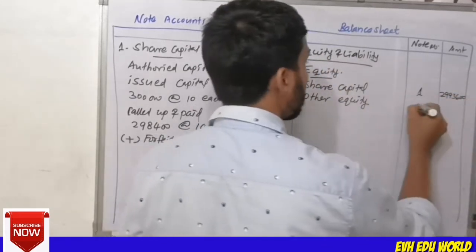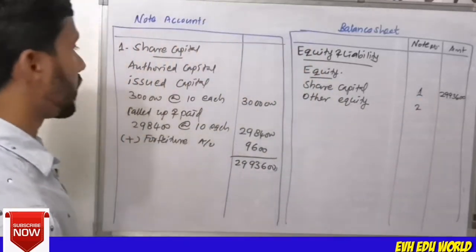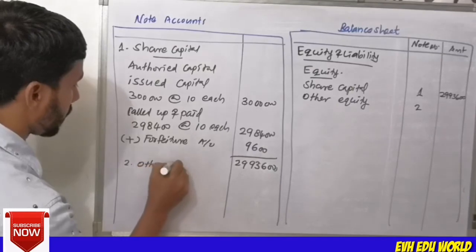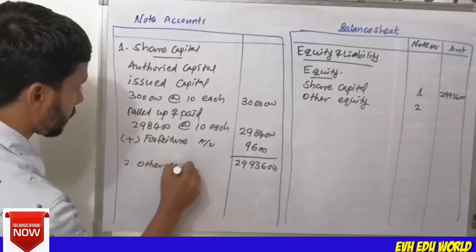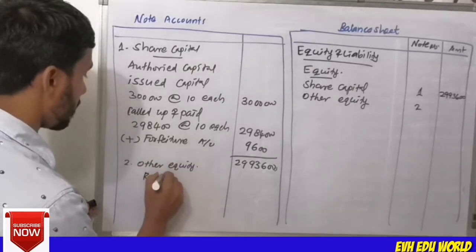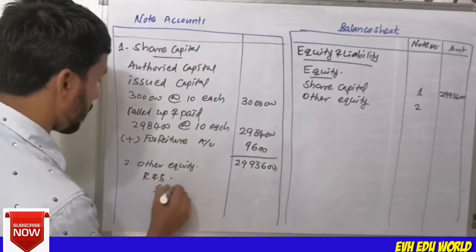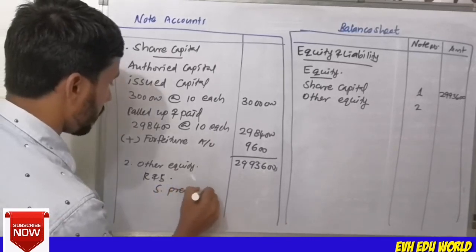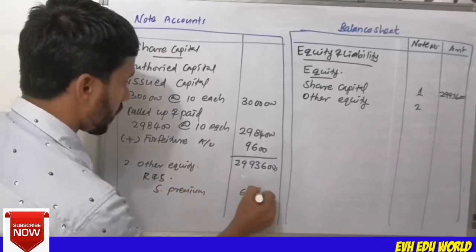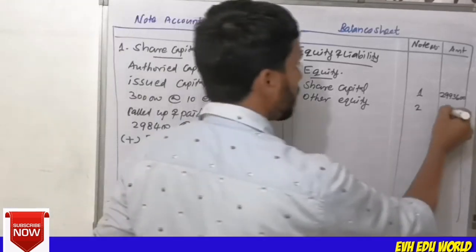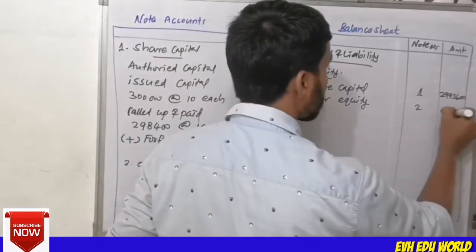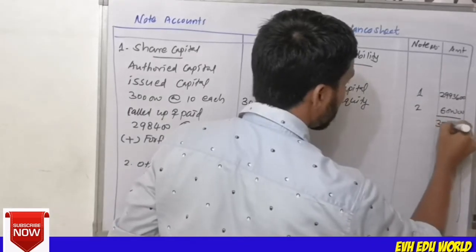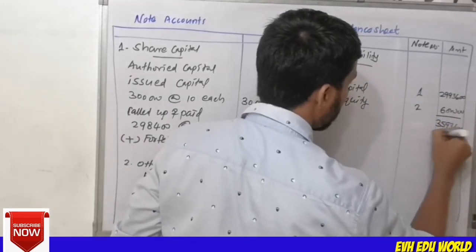Under other equity: Reserves and Surplus includes the Securities Premium. In our question, the securities premium is Rs.6 lakh on 3 lakh shares at Rs.2 each. After adjusting for the forfeiture, the securities premium balance is Rs.5,23,600.